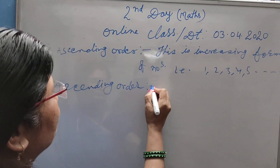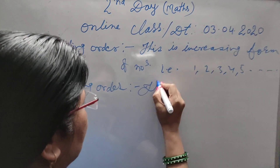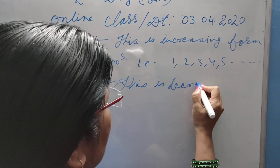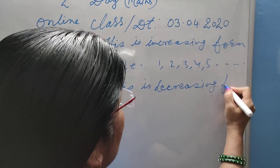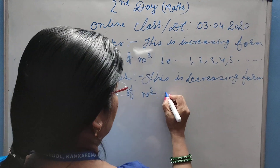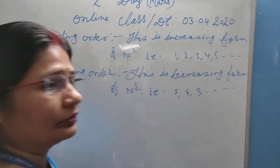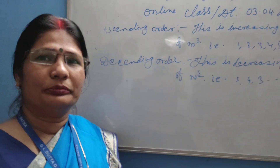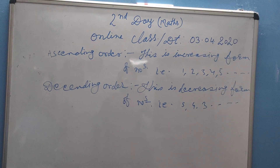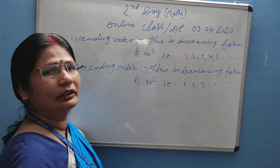Descending order — this is the decreasing form of numbers. That is 5, 4, 3, and so on. Is that clear? Now we proceed. Ascending and descending order is clear.